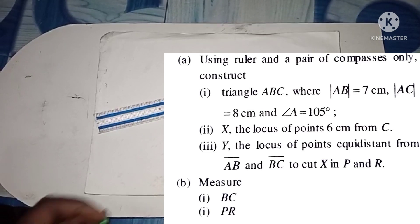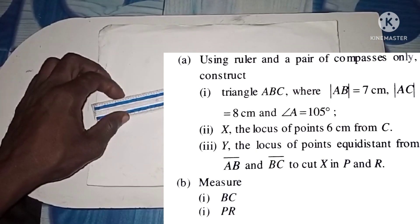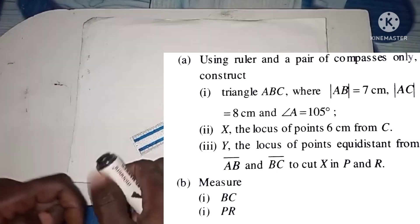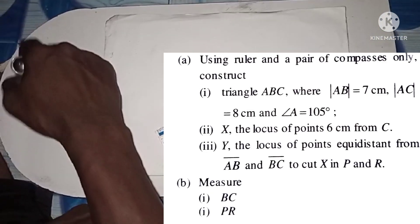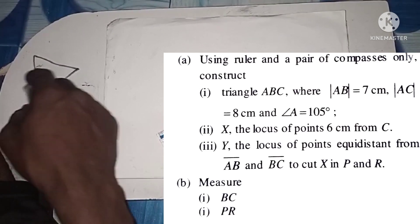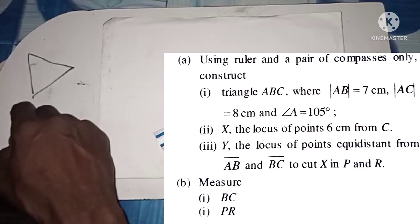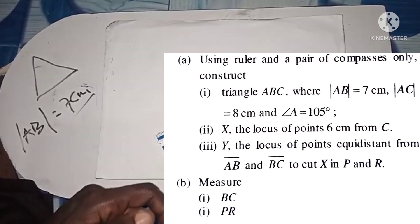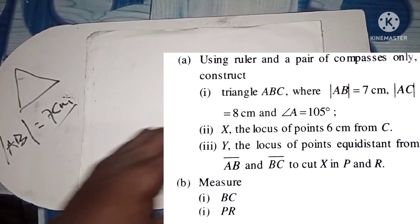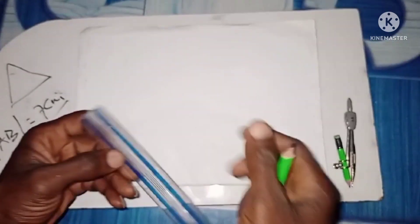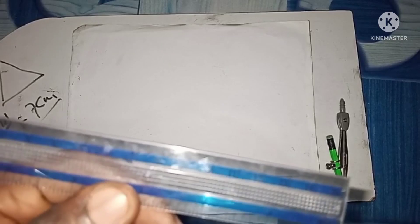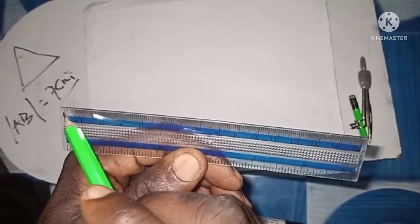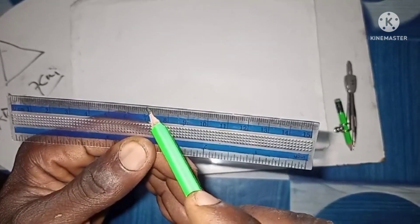According to the question, it says to use a ruler and a pair of compasses only. We are going to construct triangle ABC. The length of AB from A to B is equal to seven centimeters, so that should be your first step. Line AB is seven centimeters. Pick your ruler and take a measurement from the starting point to seven centimeters.